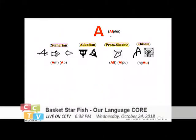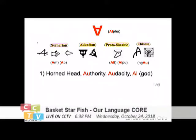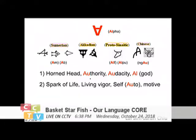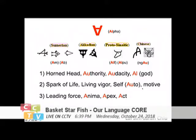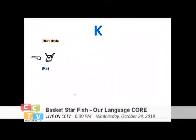If you turn it around it will be easy for you to understand — it becomes the alpha in Greek. And of course it came from the idea of the bull horn itself, it represents the horn head. From that it always comes with this 'al' sound — either it represents the writing itself as 'aleph' or 'alpha,' it means authority, audacity. And then the Hebrew God 'al' — now sometimes spelled as 'el' to distinguish it from other spelling. It also means the spark of life, the living vigor, the self. Of course it becomes 'auto' — that ability to move automatically — and the leading force. That's why it leads the alphabetical writing circle. And then all these words like 'anima,' which becomes the word 'animal' also — the apex, the act — all will be led by the same writing itself.